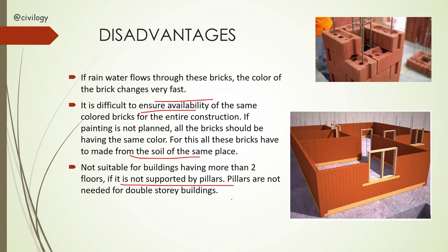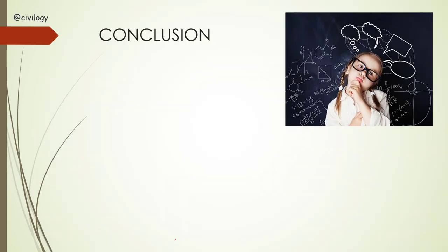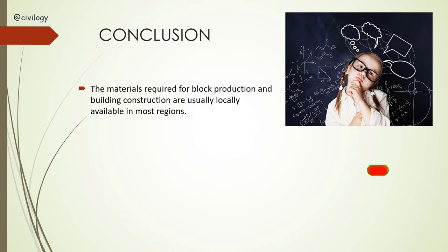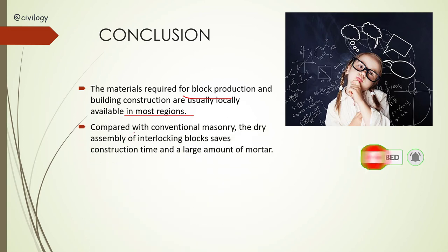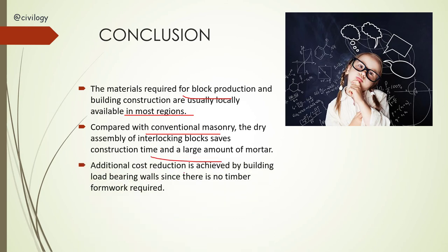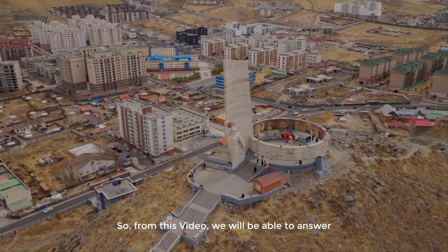In conclusion, the materials required for block production and building construction are usually locally available in most regions. Compared with conventional masonry, the dry assembly of interlocking bricks saves construction time and a large amount of mortar. Additional cost reduction is achieved by building load-bearing walls since no timber formwork is required for construction.